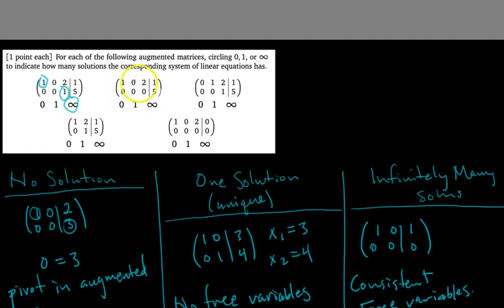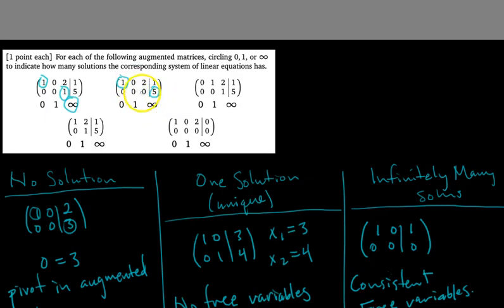The second matrix has pivots here and here, but the second pivot is in the augmented column, which would give us zero equals five. That can never be satisfied no matter what we pick for our unknowns. Since there's a pivot in the augmented column, the answer is no solution.